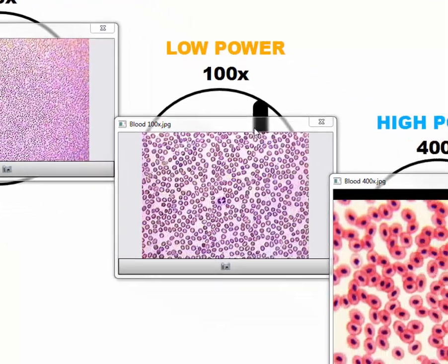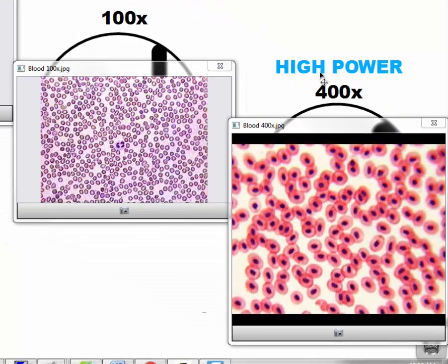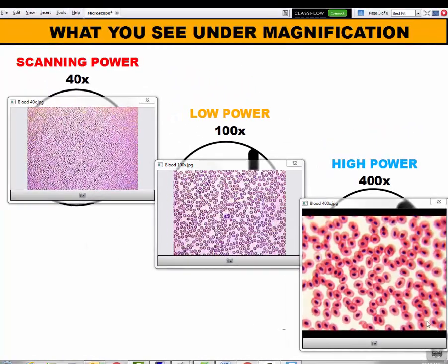Then when we switch over to high power, our high power lens gives us the biggest magnification on the microscope. So this microscope magnification is blowing up the blood cells 400 times our size. And this is going to give us our greatest detail and give us the fewest or smallest area of the field of view that we can see. So this is what magnification looks like when using the compound microscope.